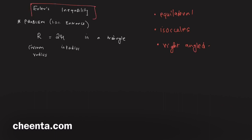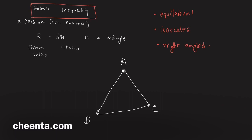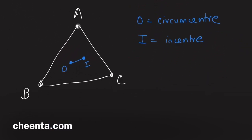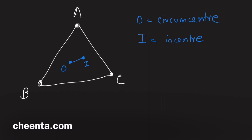To understand Euler's inequality, let's draw a picture. We have triangle ABC with two special points inside: O, the circumcenter, and I, the incenter. We are interested in the distance between O and I — this is the context of this problem.